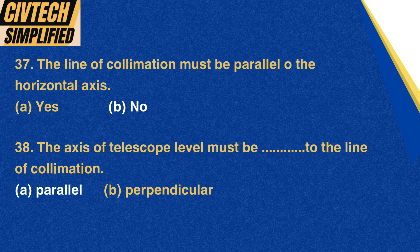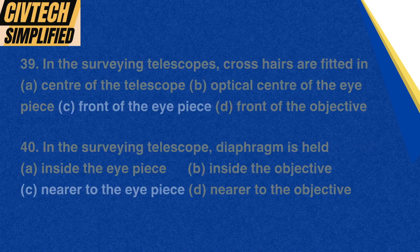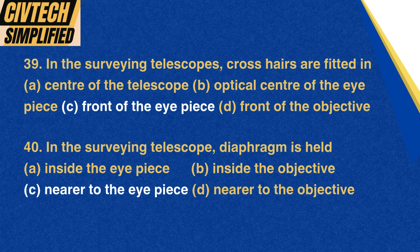Question 38: The axis of the telescope level must be — to the line of collimation: A. Parallel, B. Perpendicular. Correct option: A. Parallel. Question 39: In the surveying telescope, crosshairs are fitted in: A. Center of the telescope, B. Optical center of the eyepiece, C. Front of the eyepiece, D. Front of the objective. Correct option: C. Front of the eyepiece. Question 40: In the surveying telescope, the diaphragm is held: A. Inside the eyepiece, B. Inside the objective, C. Nearer to the eyepiece, D. Nearer to the objective. Correct option: C. Nearer to the eyepiece.